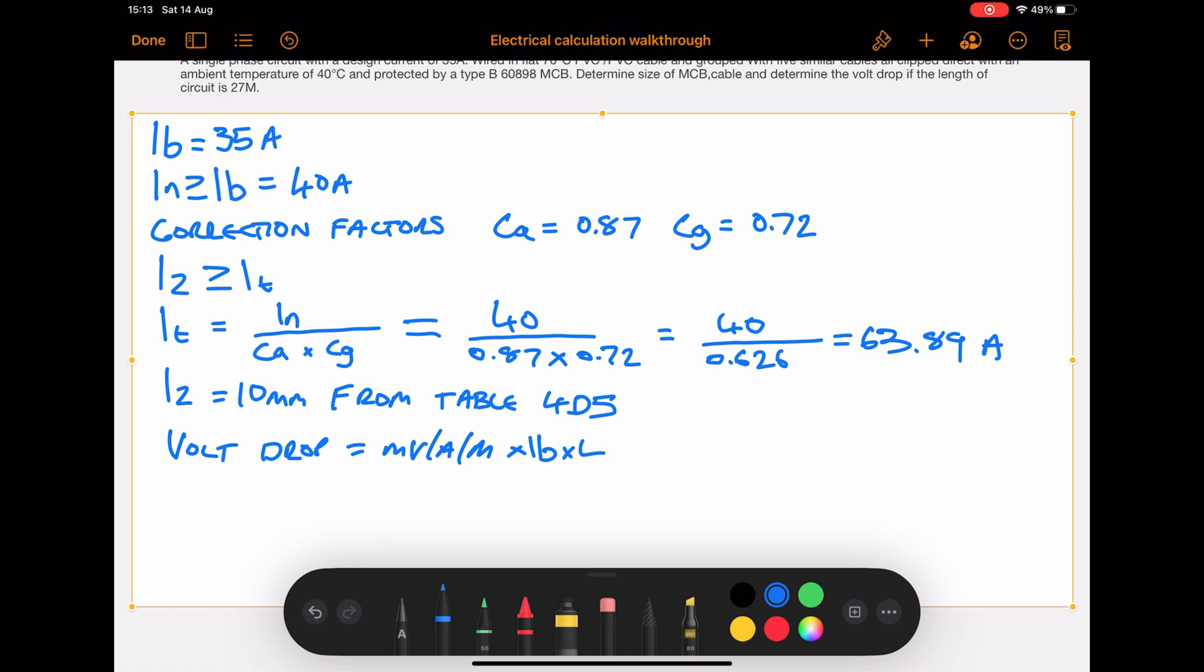The next thing we want to do is calculate the volt drop. The calculation for volt drop is millivolts per ampere per meter multiplied by design current multiplied by length, then divided by 1000.